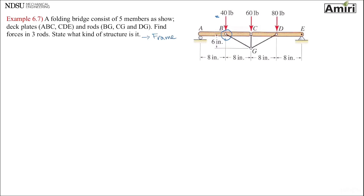What we do with frames is that we take them apart — we disassemble them. They have five members, so we have to draw free body diagrams of five members. But DG, CG, and BG are two-force members, so I'm going to skip drawing free body diagrams of those. I'm going to draw the FBD of ABC.